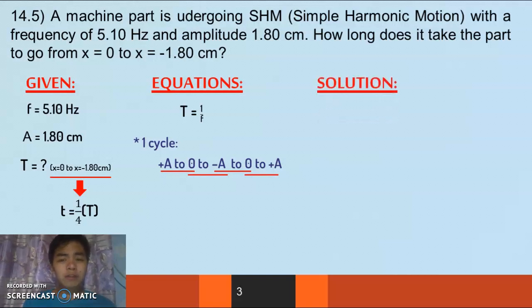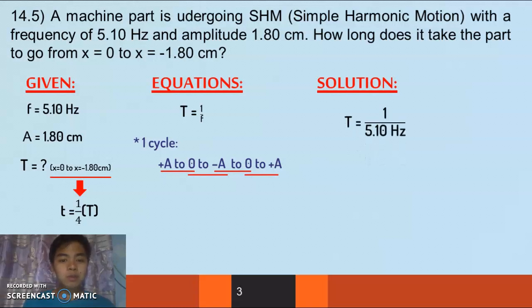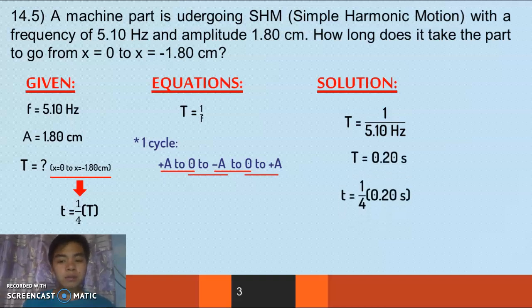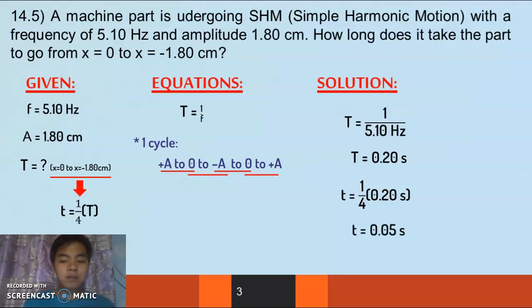So what we are looking for is 1/4 of the total period. Solving this: the period is 1 over the frequency, so 1 over 5.10 Hz gives us 0.20 seconds. We need 1/4 of that, since we only need the time for x = 0 to x = -1.80 cm, which gives us 0.05 seconds.